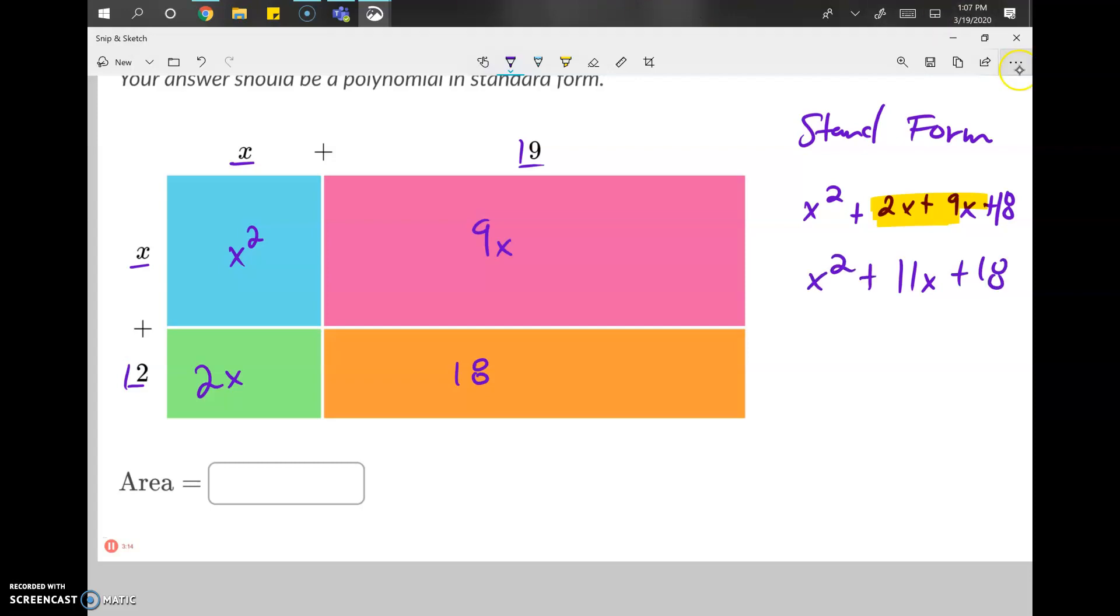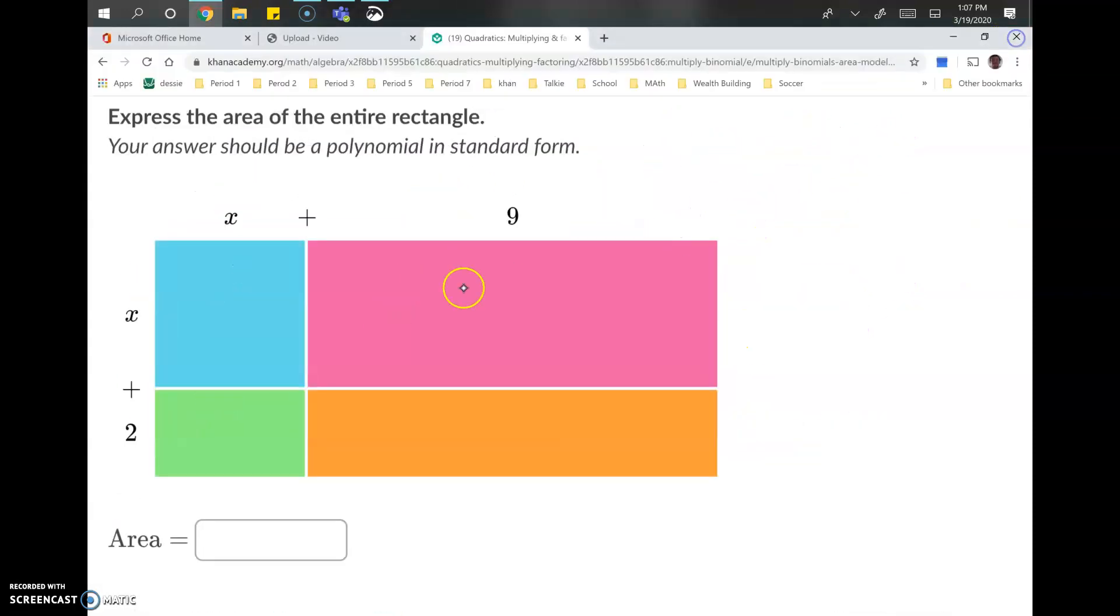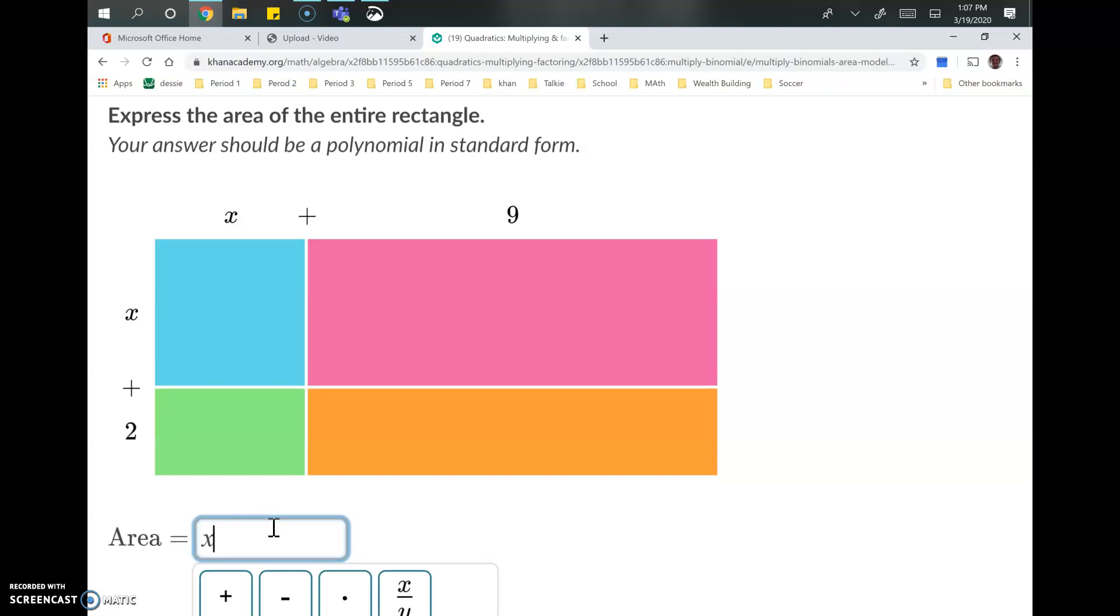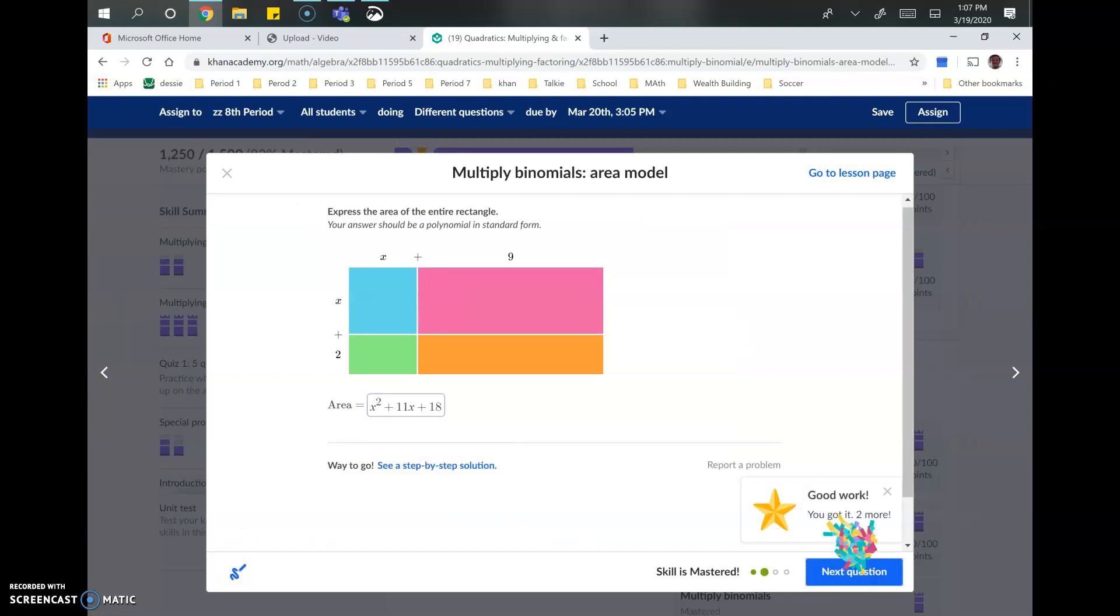So our final answer, x squared plus 11x plus 18. x squared plus 11x plus 18. And I don't want to forget the x, or I'll get it wrong. So make sure to do that right.